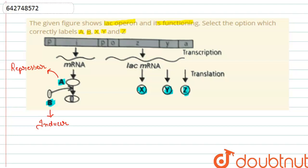So this is the functioning of the repressor gene and the inducer gene. Coming to the X, Y, and Z, X is the beta galactosidase.